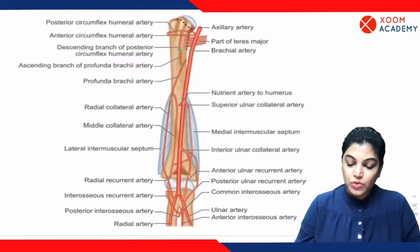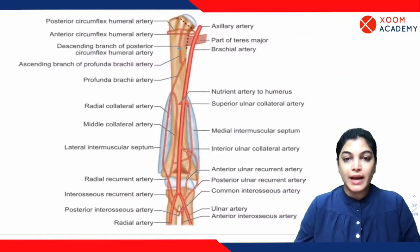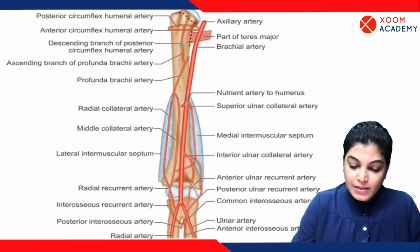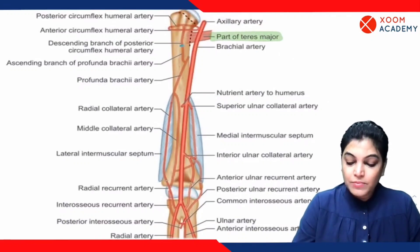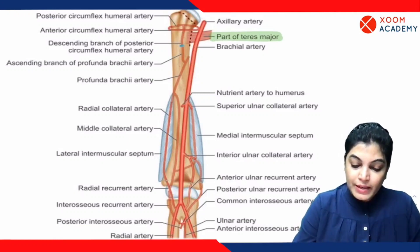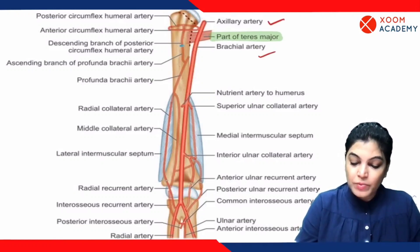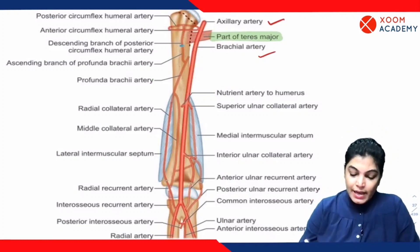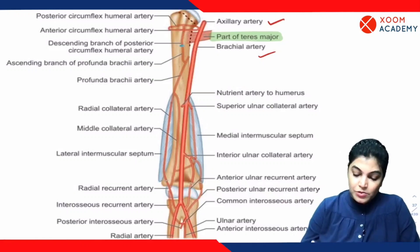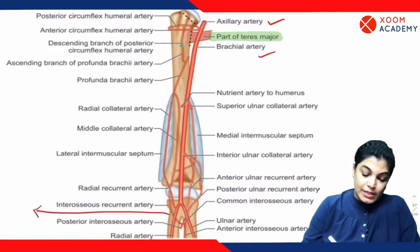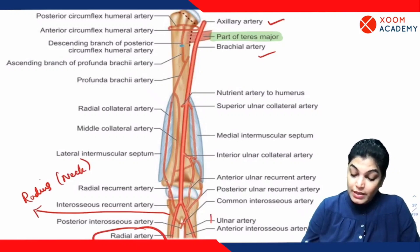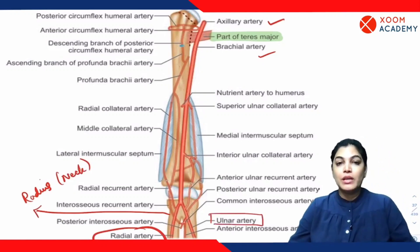Looking at this image, we can see the landmark of the lower border of teres major muscle, where the axillary artery continues to become the brachial artery. At the level of the neck of radius — this bone is the radius — the brachial artery divides into two terminal branches: the radial artery laterally and the ulnar artery medially.